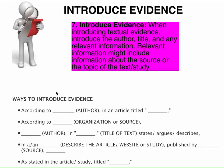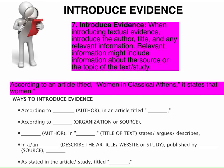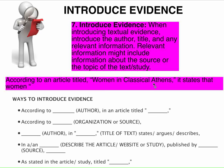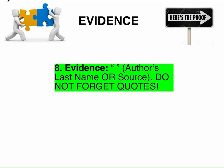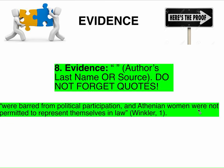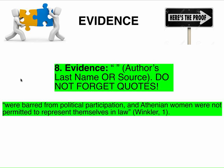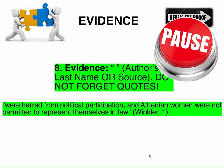Now you're going to introduce your next piece of evidence. This is the way I introduce it: 'According to an article titled Women in Classical Athens, it states that women were barred from political participation and Athenian women were not permitted to represent themselves in law.' Pause, write out your introduction to your evidence, and choose that piece of evidence. Make sure your evidence really works together to support your topic sentence — they should both address something similar and build on each other to make a really strong paragraph.